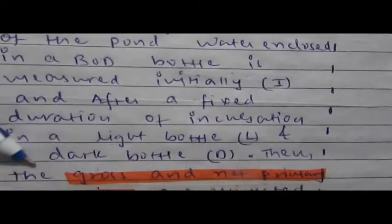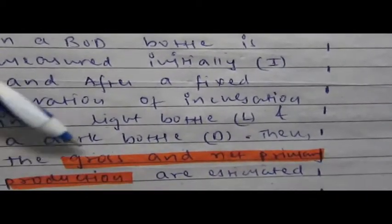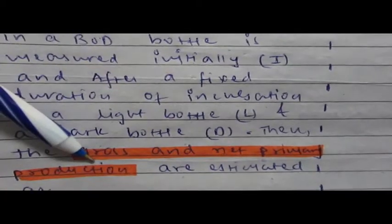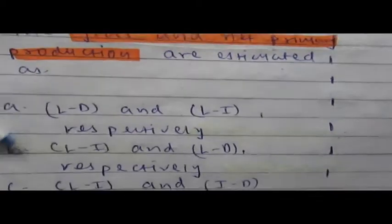In light bottle and dark bottle, we have to count gross and net primary production. Here are the options and among them we have to find out the correct one.